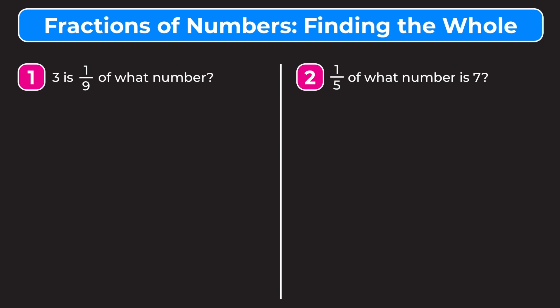We're going to learn how to translate a sentence into a math equation. Three is just a number so it's going to stay as is — so we have three. The word 'is' in math means equals; like if I say x is five that means x equals five. So we have three equals. One ninth is just a number so it stays as it is. In math 'of' means multiply. So one ninth times — and then 'what number' is what we're solving for, so that's going to be our variable. We're going to say three equals one ninth times x.